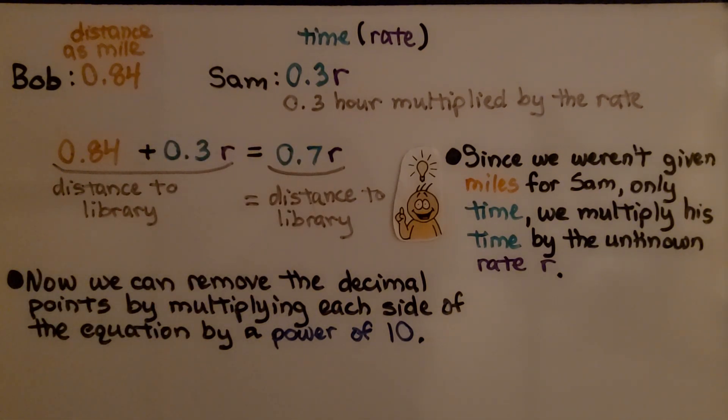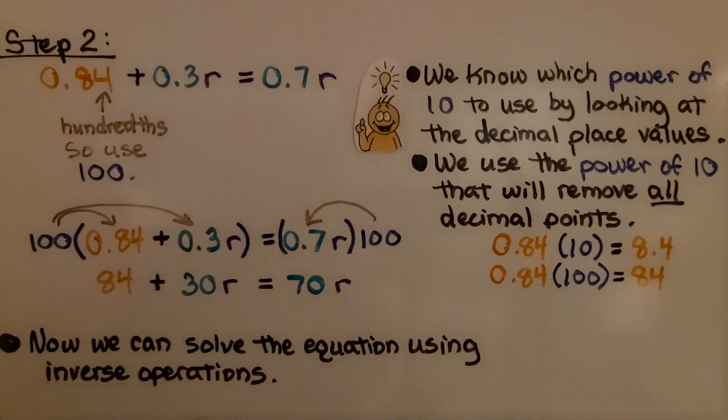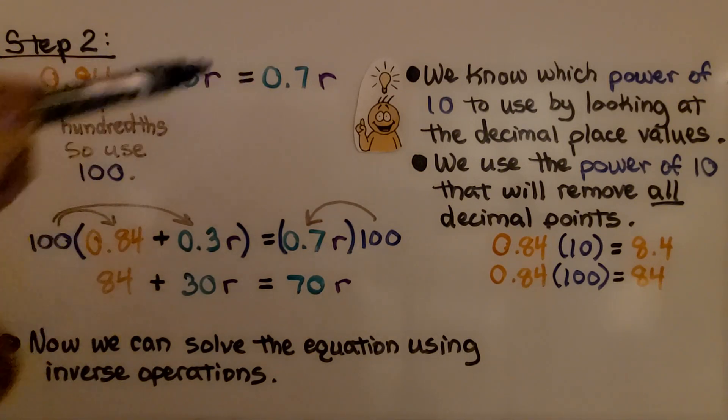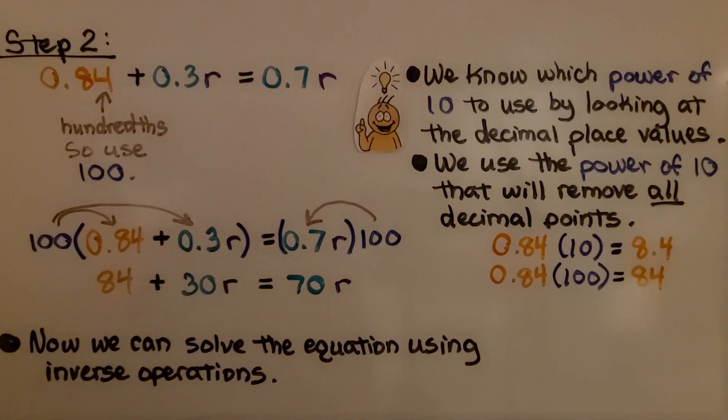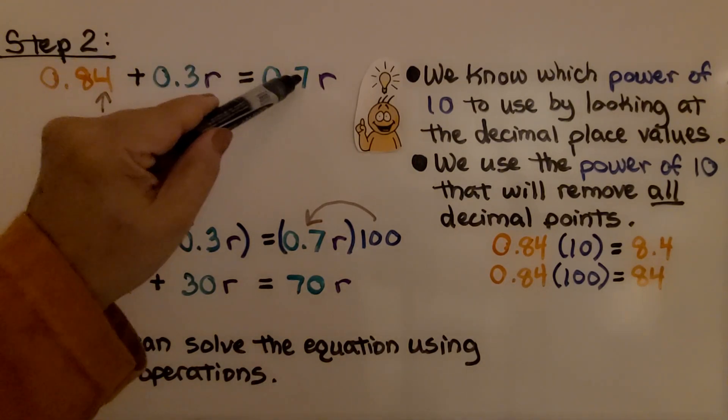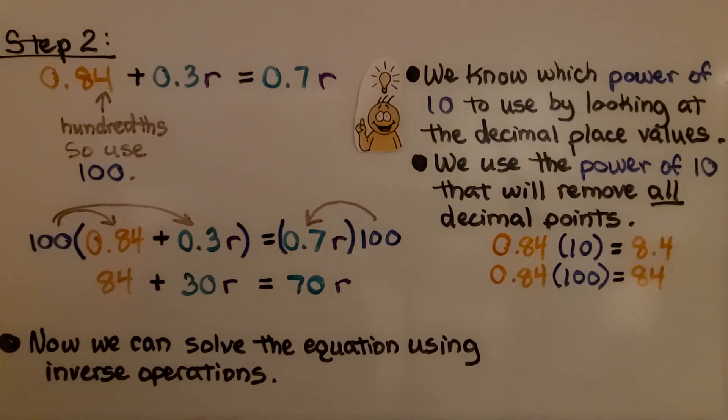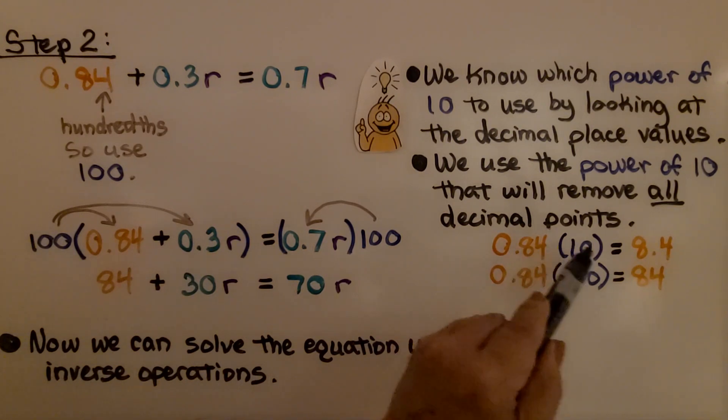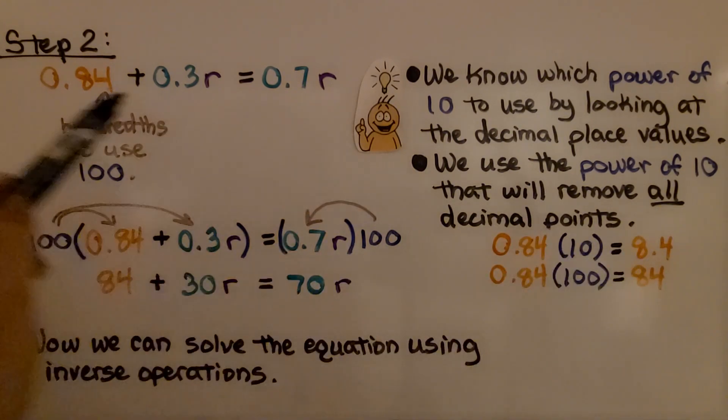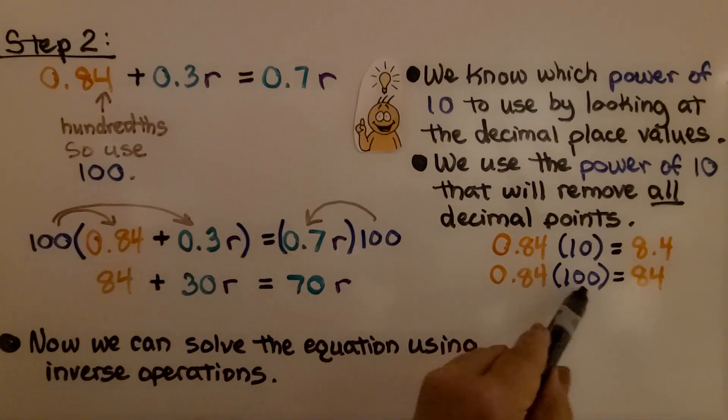So now we can remove the decimal points by multiplying each side of the equation by a power of 10. Now here's step two. We have 0.84 plus 0.3r equals 0.7r. We know which power of 10 to use by looking at the decimal place values. We have hundredths, tenths, and tenths. We use the power of 10 that will remove all decimal points.